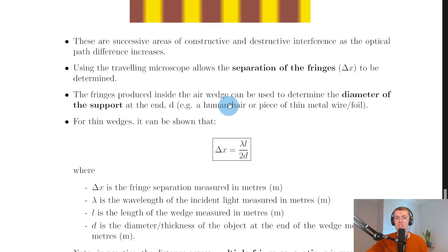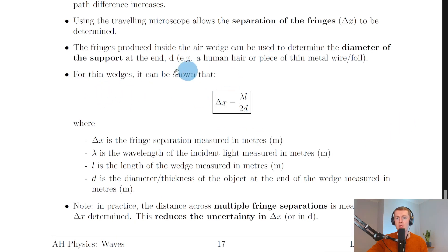The fringes produced inside the air wedge can be used to determine the diameter of the support at the end d, for example a human hair or piece of thin metal wire or foil. For thin wedges it can be shown that Δx = λl/2d.